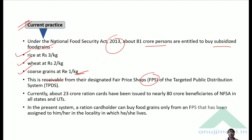Currently, about 23 crore ration cards have been issued to nearly 80 crore beneficiaries of NFSA across all states and UTs. In the present system, a ration card holder can buy food grains only from the FPS to which they have been assigned.